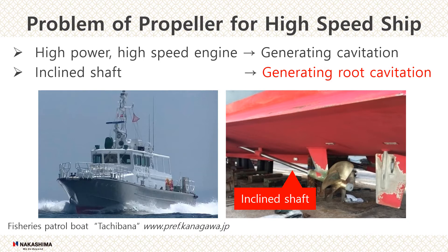Furthermore, these high-speed ships have an inclined shaft, so cavitation is caused easily on the roots of the propeller blade and boss. This is called root cavitation. This root cavitation can cause erosion when it collapses — this phenomenon is root cavitation erosion.